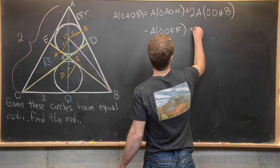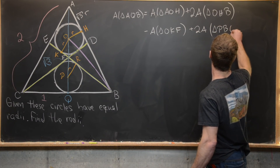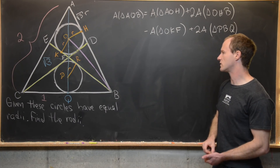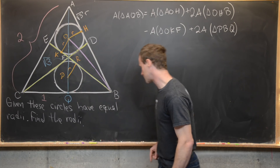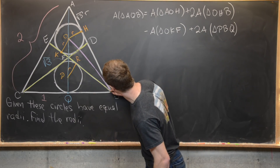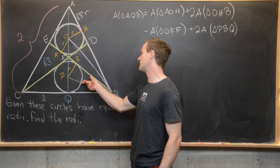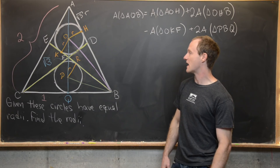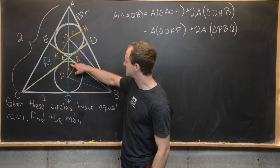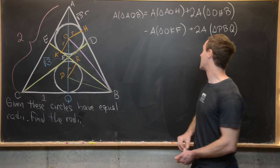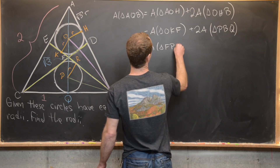Next we'll add twice the area of triangle PBQ — that's the triangle down here — and why twice? Because we've got this little piece right here and this little piece up here. The only little piece we lack at this point is triangle FPR, so we add the area of triangle FPR.